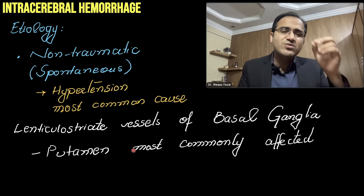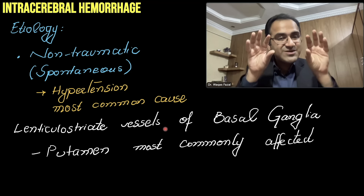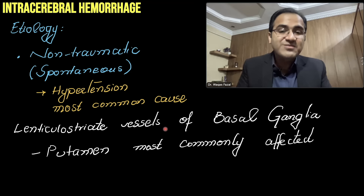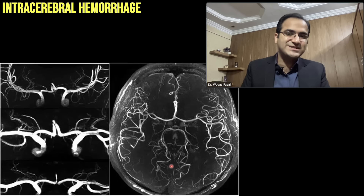The most common site is the lenticulostriate vessels. These small vessels arise from the middle cerebral artery and supply the basal ganglia and putamen. When these vessels are damaged, focal neurological deficits result. The thalamus is the second most common site after the lenticulostriate vessels.